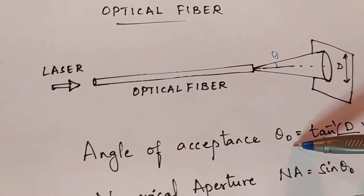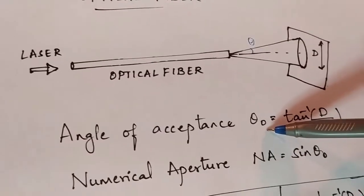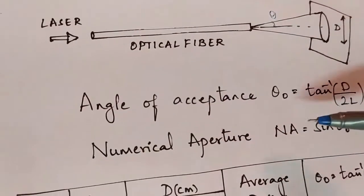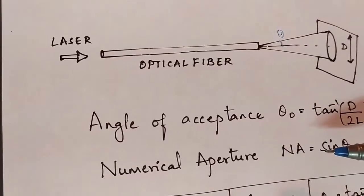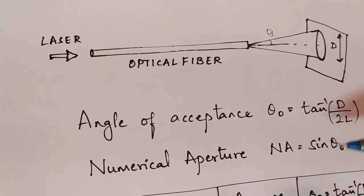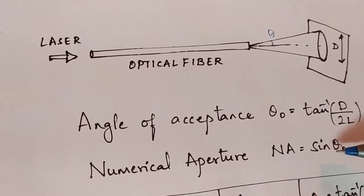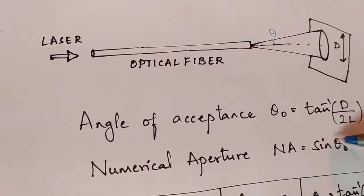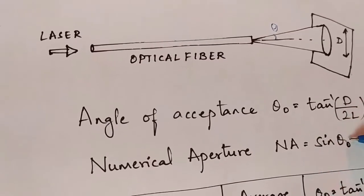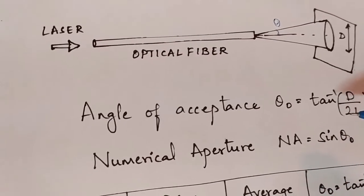Once we know the acceptance angle theta naught, we know from our understanding of optical fibers that the numerical aperture is calculated as sine of theta naught — that is, sine of the acceptance angle.